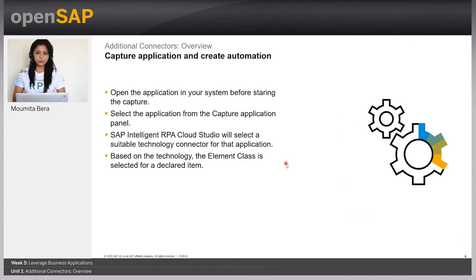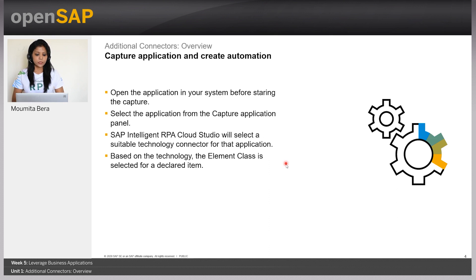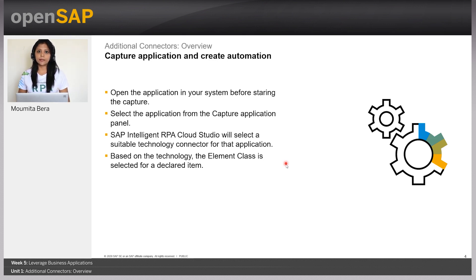Whatever connector we use, first we have to make sure the application is open in our system. Then we click on capture application, and once that application is selected, the correct technology will be selected by Cloud Studio itself. Based on the technology selected, the element class will also be selected — for example, text and button for web applications, and SAP UI5 and SAP GUI each have their own dedicated element classes.